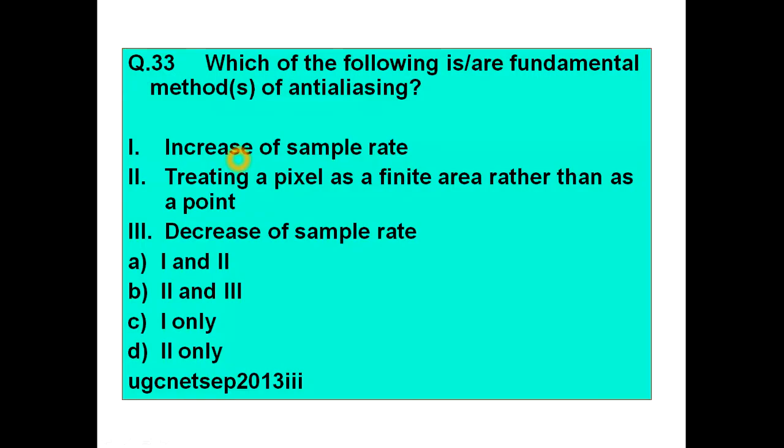Next question. Which of the following is or are fundamental methods of anti-aliasing? Anti-aliasing is a very important technique that you should know. First option: increase of sample rate. Second: treating a pixel as a finite area rather than as a point. Third: decrease of sample rate. Option A says both 1 and 2 are correct. Option B says 2 and 3 are correct. Option C says 1 only, and D says 2 only. It was also asked in UGC NET September 2013 examination.